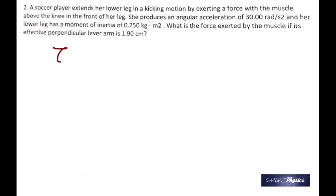So I and alpha are given. Since you have I and alpha, first you can find the torque. Tau is torque. And there are two formulas for calculating torque; I have put them both together.